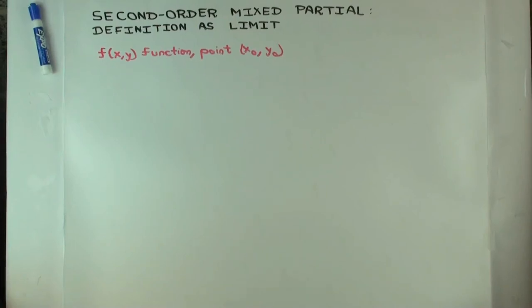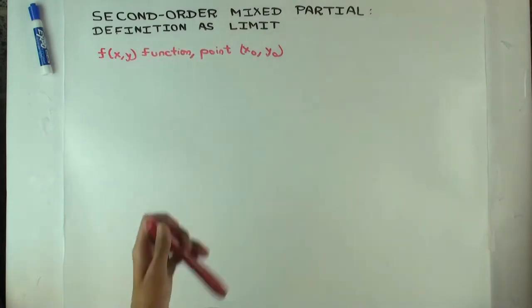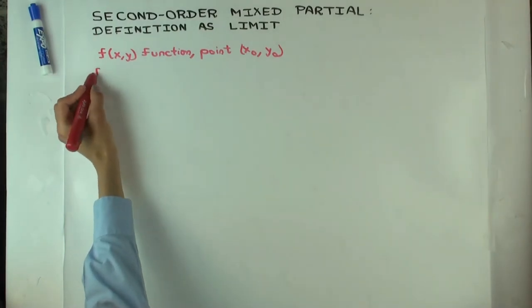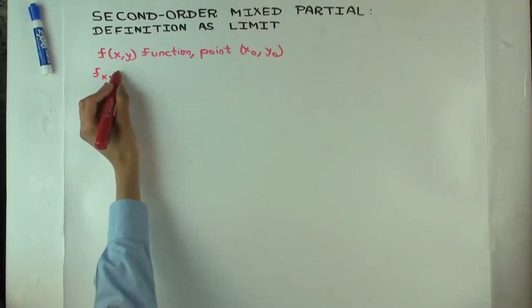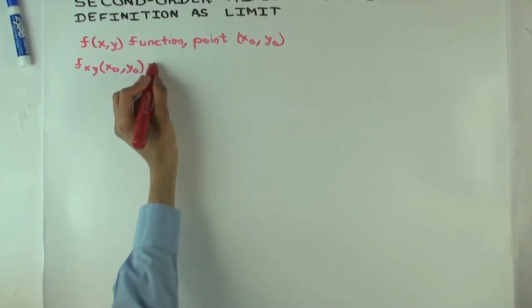In this talk, I'm going to consider the second-order mixed partial and try to define it as a limit. There's actually two second-order mixed partials. What are they? f sub xy and f sub yx, and I'm going to try to define each one of them as a limit.